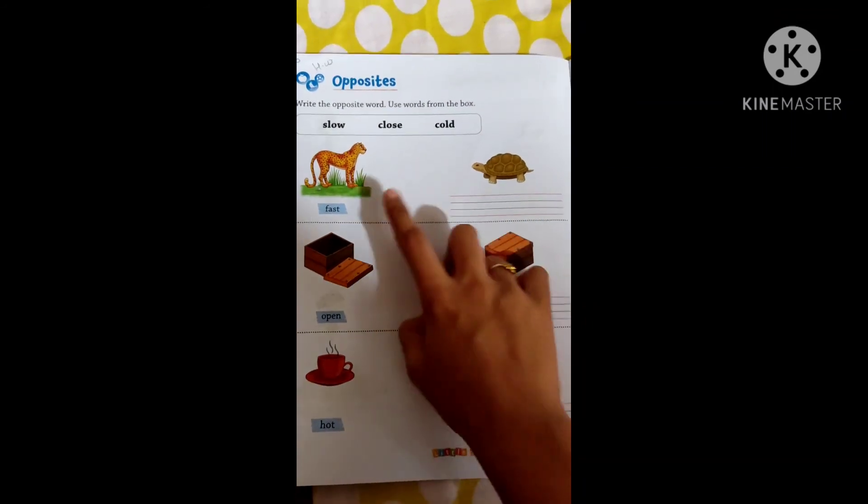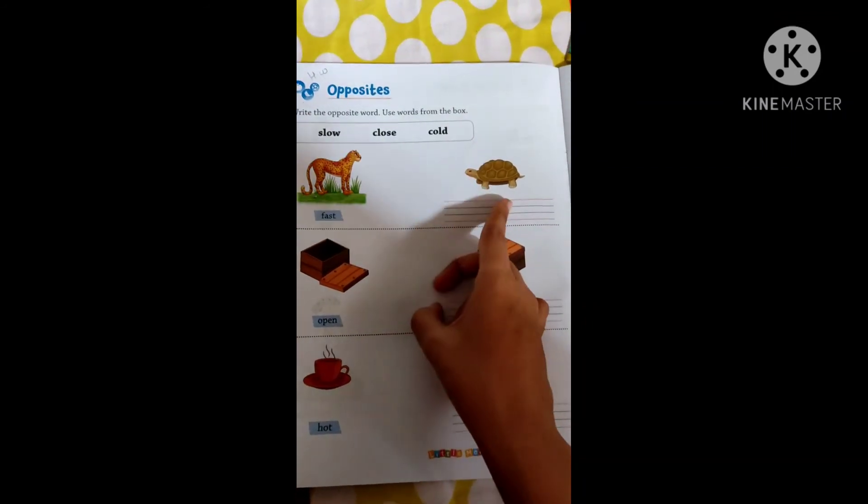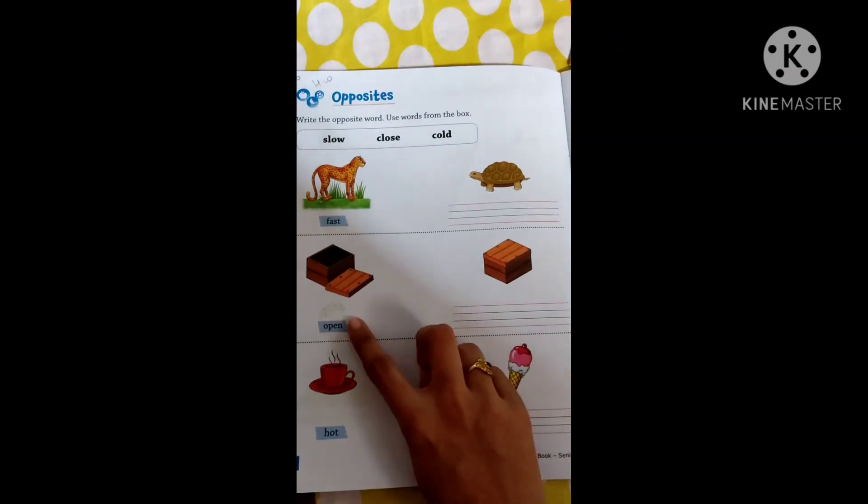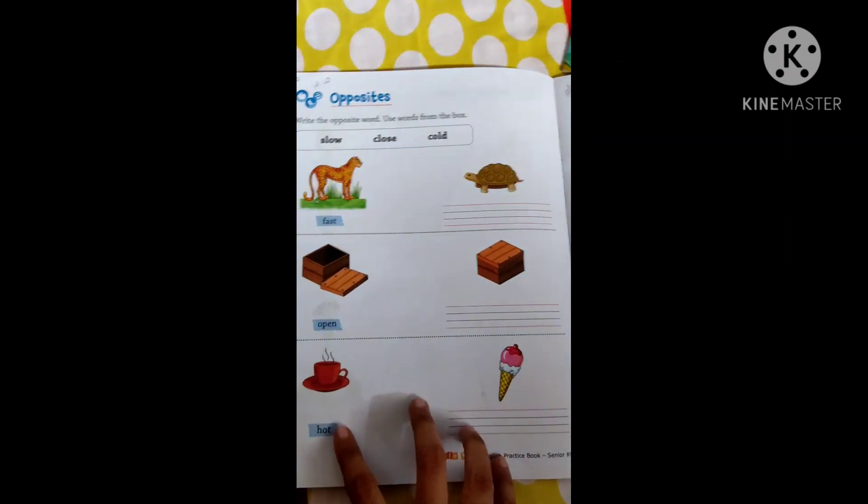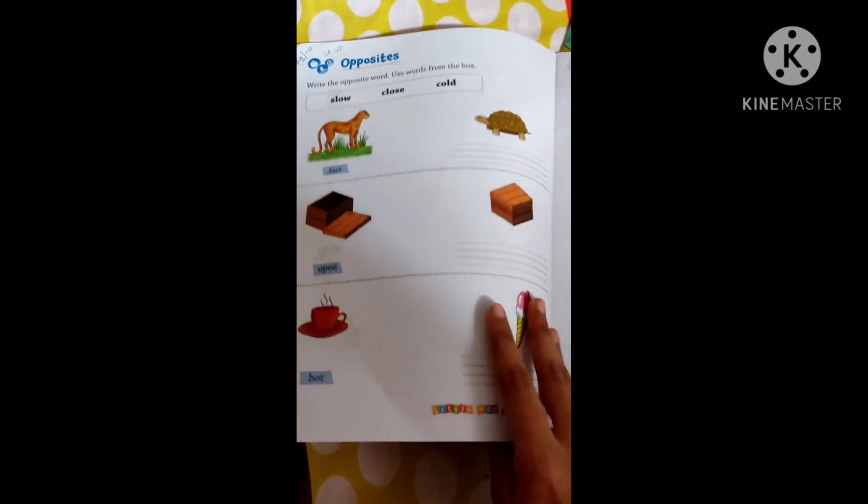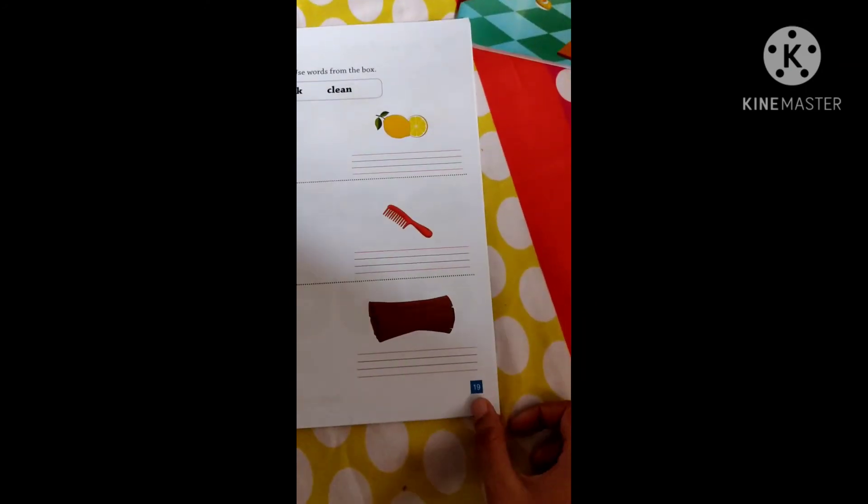This is your homework. You can see fast, slow. Then now given open, close. Hot, cold. Come to page number 19.